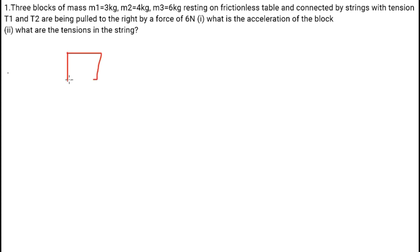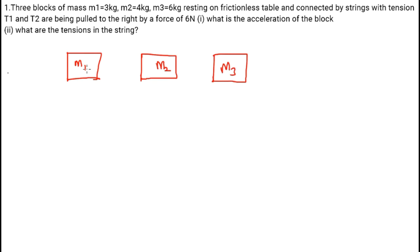Three blocks of mass M1, M2, M3, resting on a frictionless table and connected by strings with tension T1 and T2, are being pulled to the right by a force of 6 Newton. Let's represent this as block M1, the second block M2, and then the third block M3. Between the blocks there will be strings connecting them — this is T1, and the second string is T2.